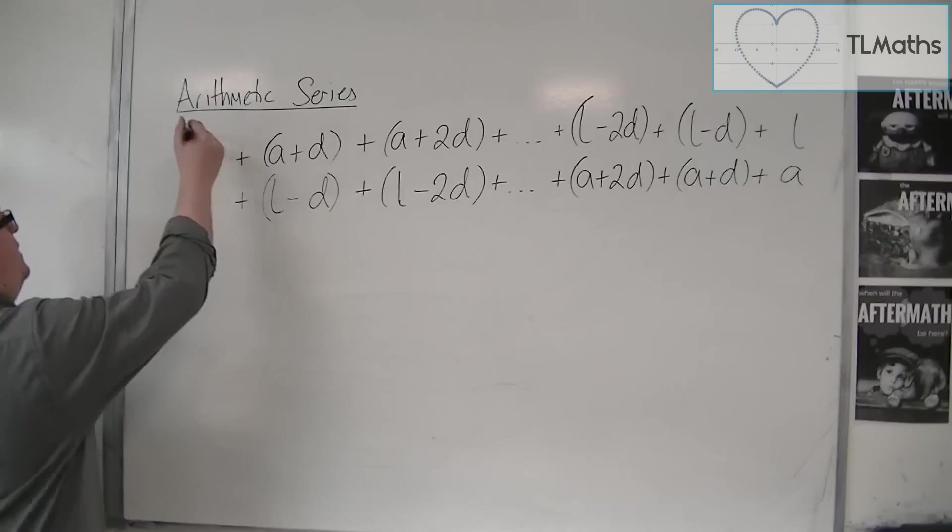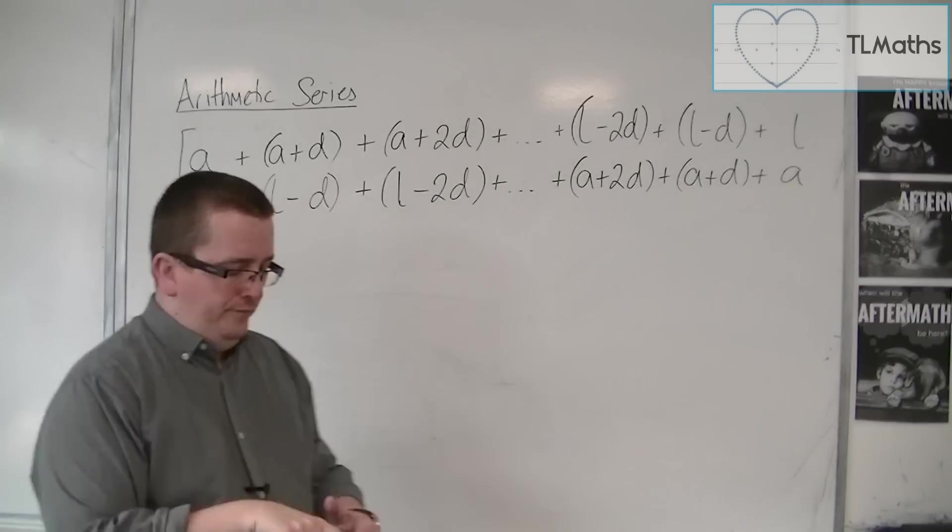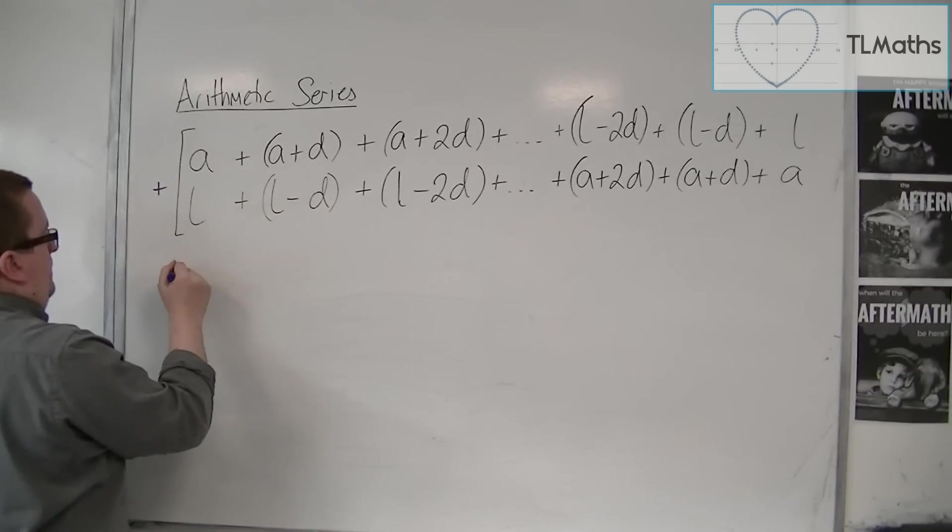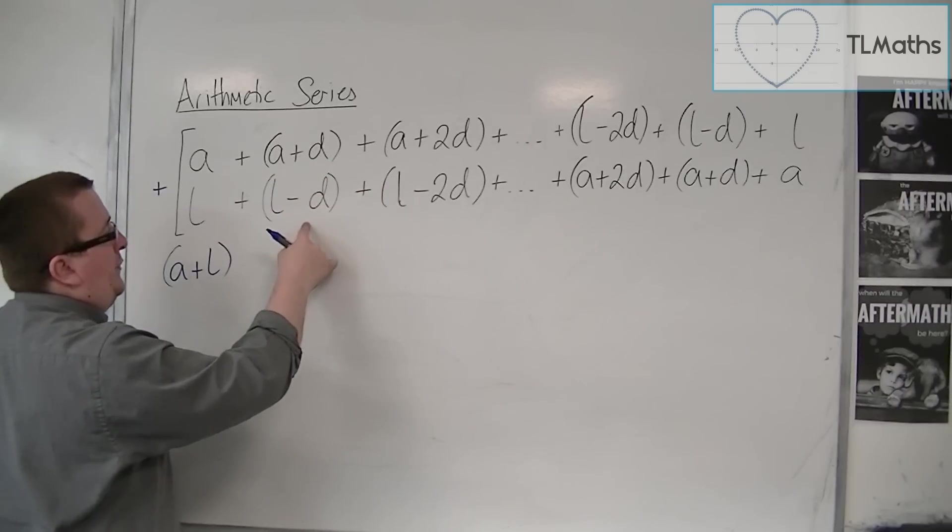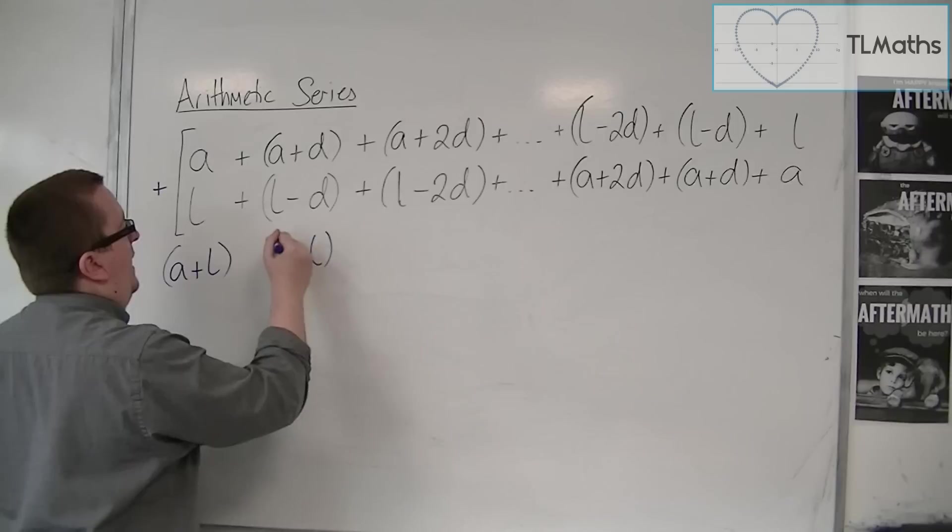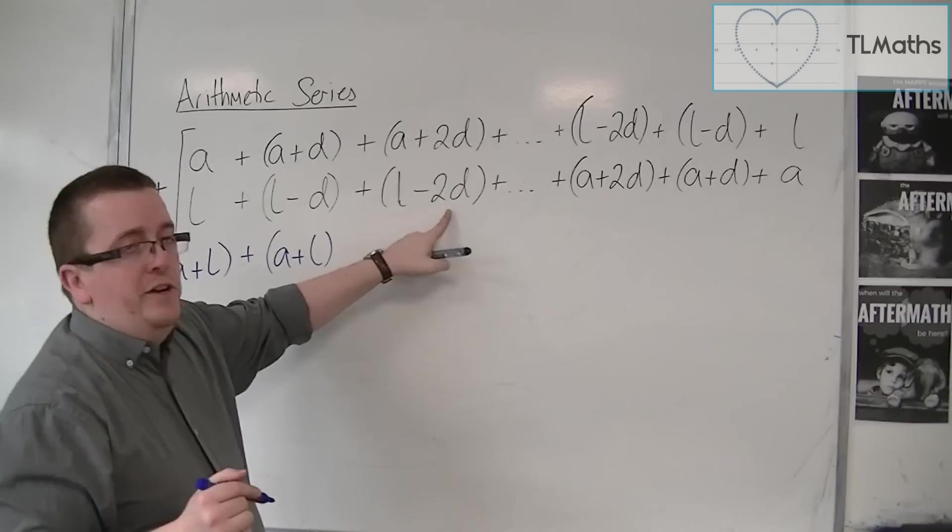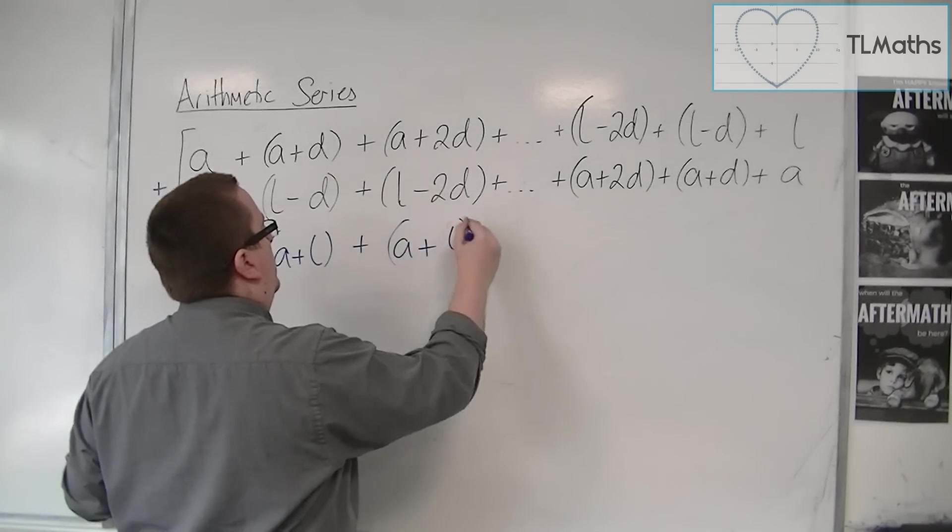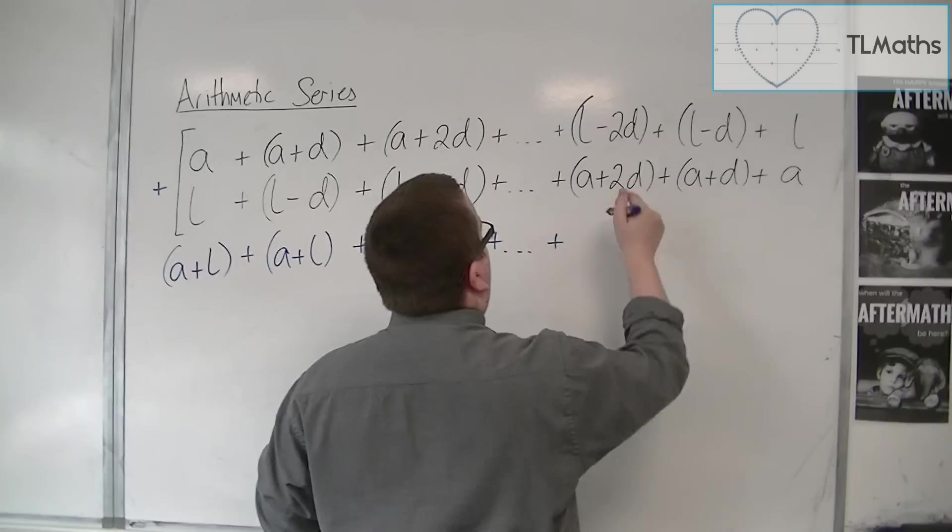What we're going to do is add these two series together. We're going to get a plus L, and over here we're going to get a plus d plus L minus d, so the d's will actually cancel each other out and I'll just be left with a plus L. Here I've got 2d minus 2d, so the 2d's cancel and I'm left with a plus L. Each term in this series will actually be just a plus L.